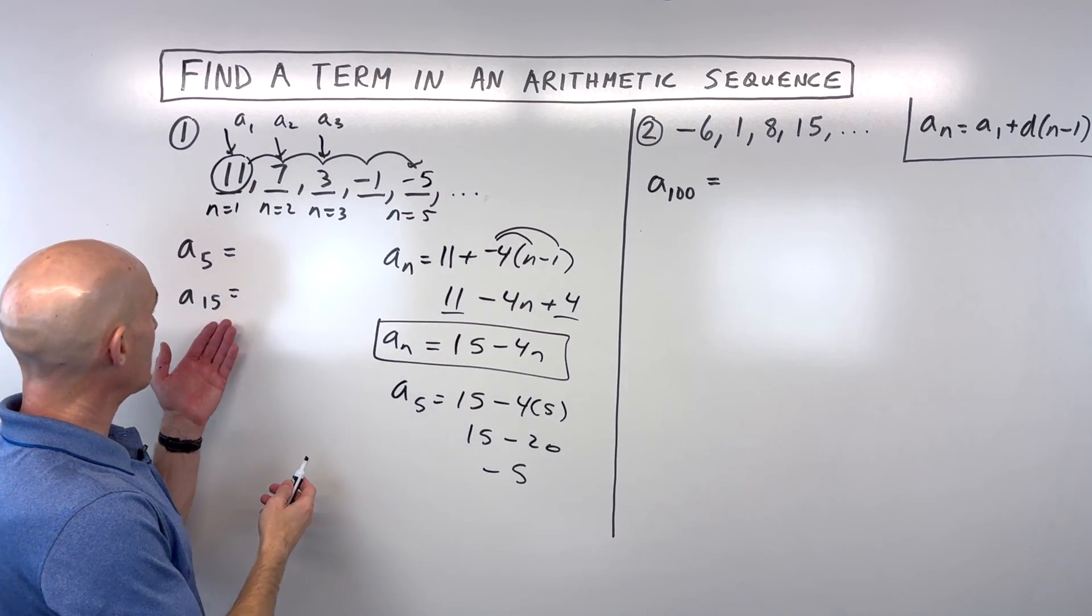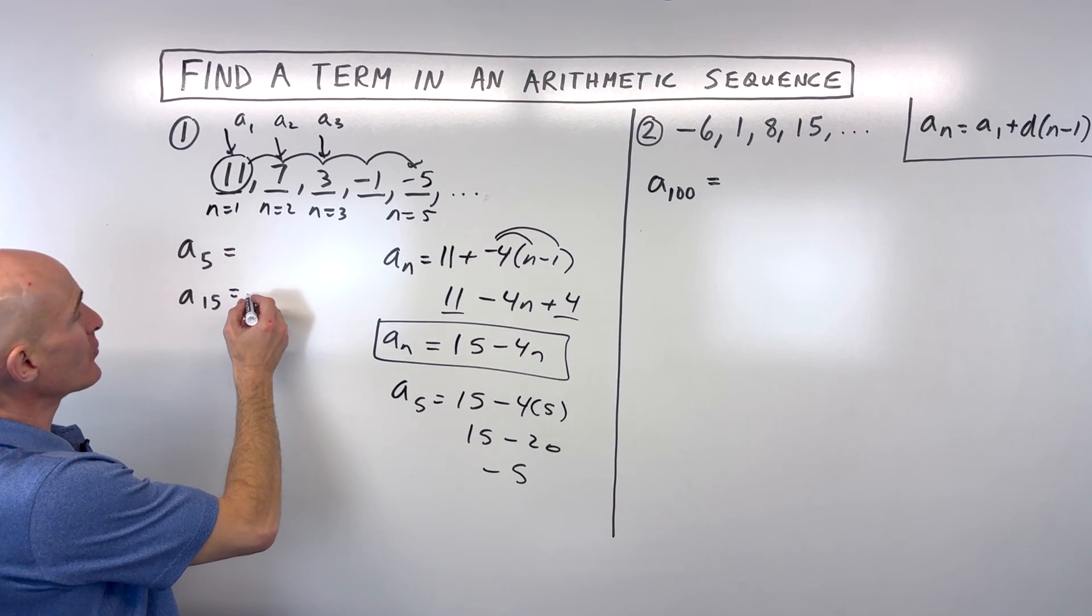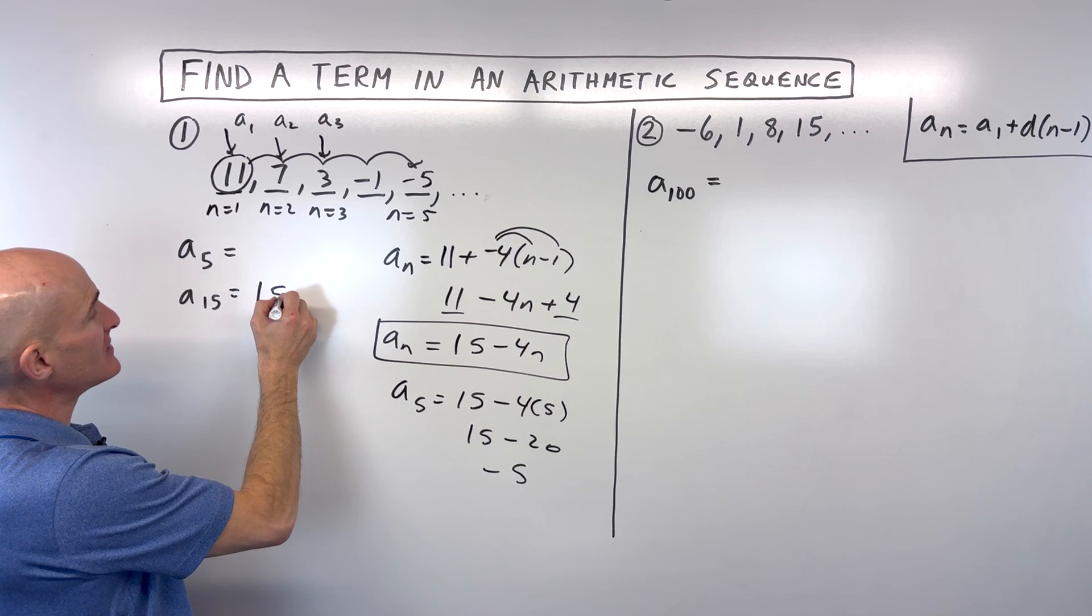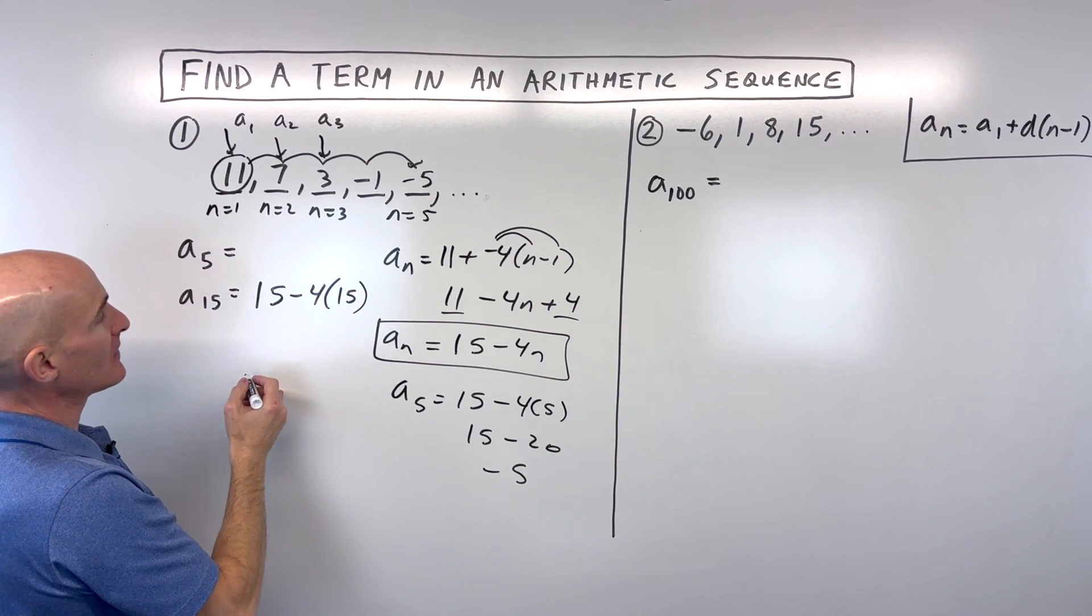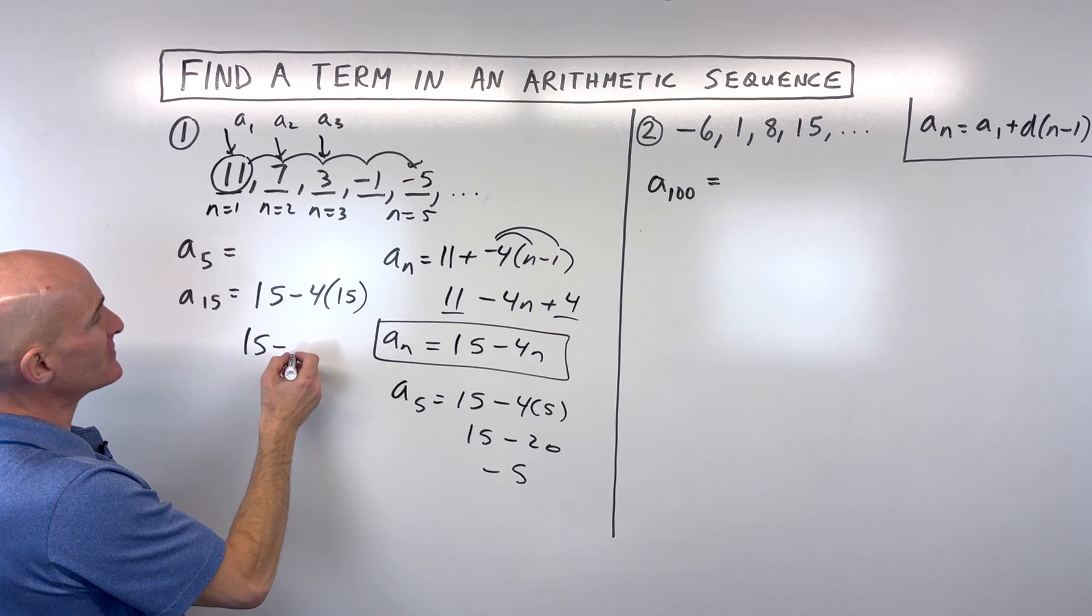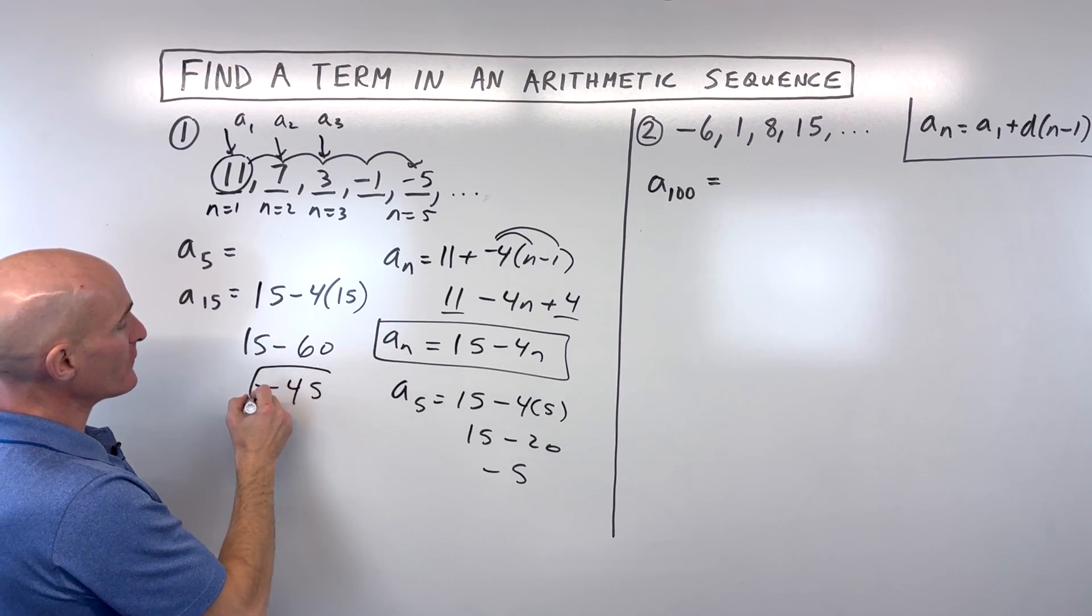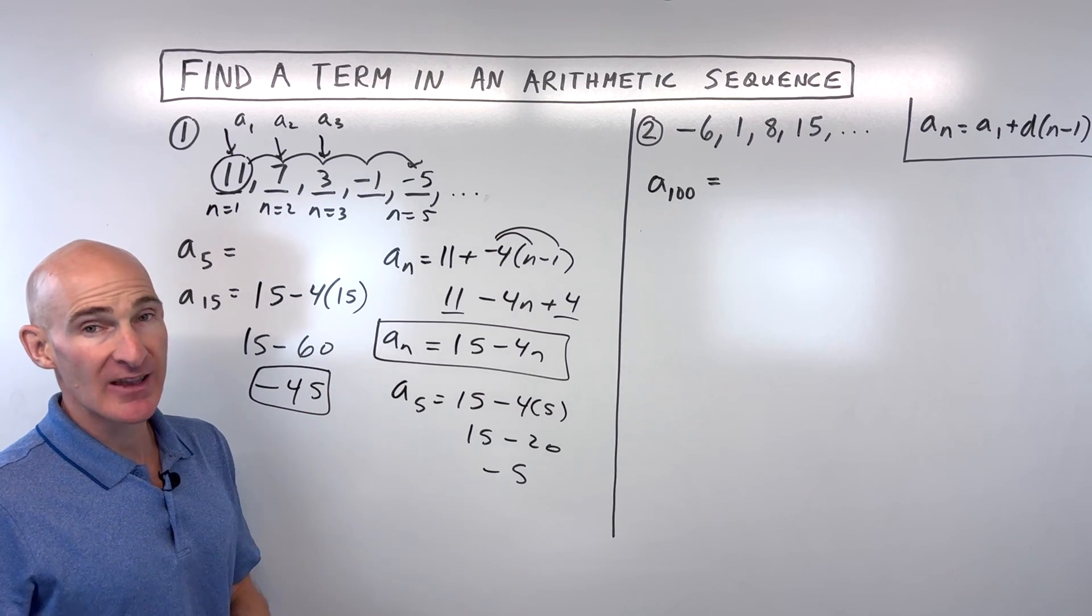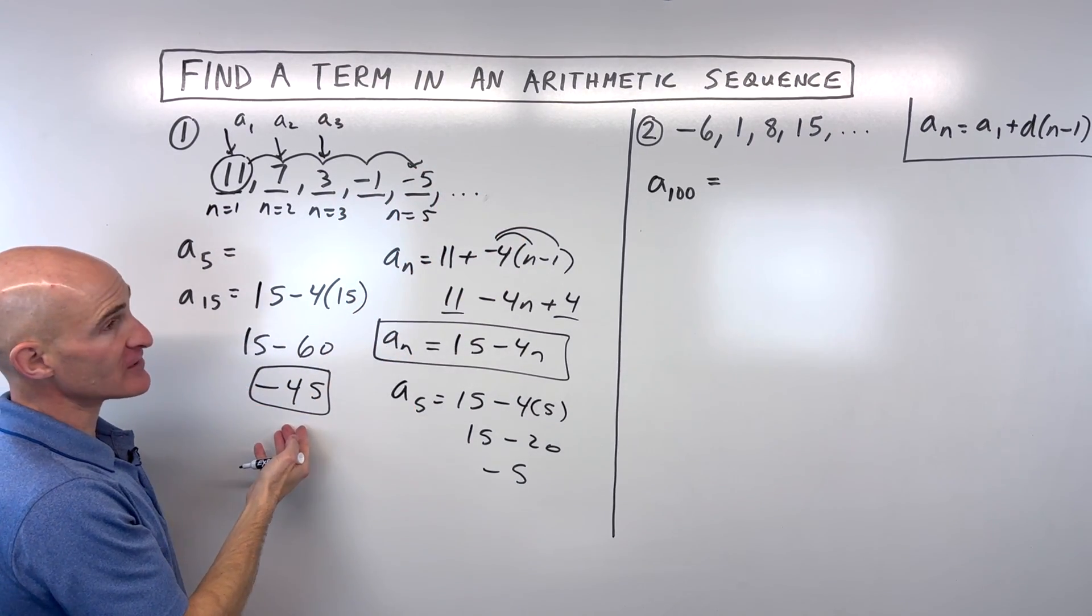But say if we wanted to find like a sub 15, like the value of the 15th term. So here we would say, it's going to be 15 minus 4 times 15. So that comes out to 15 minus 60, which is negative 45. So you can see this really saves us a lot of time from having to subtract 4 until we finally get to that 15th term.